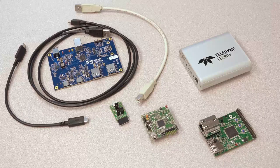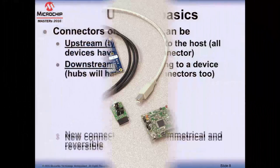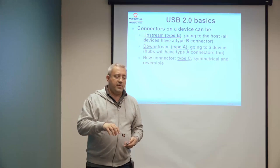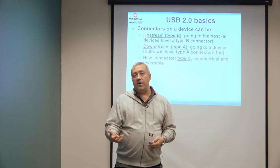Last year the USB Implementers Forum released specifications for a new connector — the Type C. The Type C connector is symmetrical and reversible, meaning there is no longer a difference between upstream and downstream, and you can flip the connector upside down and it still plugs in. There is much more to the Type C connector; there's a dedicated class going through its details, especially when used with other USB-related protocols like the Power Delivery protocol.